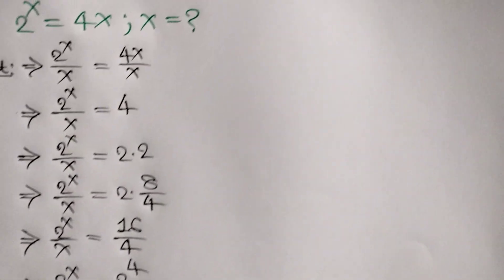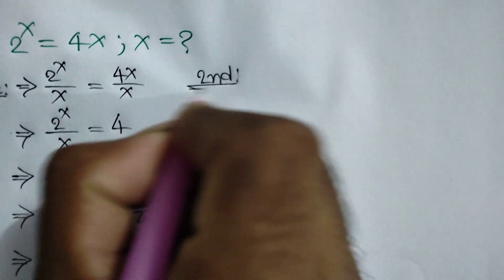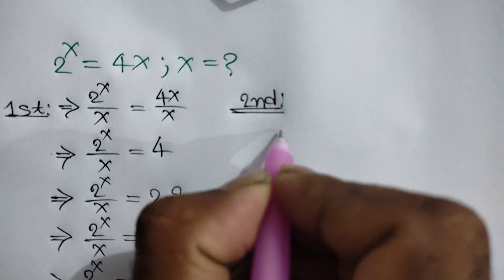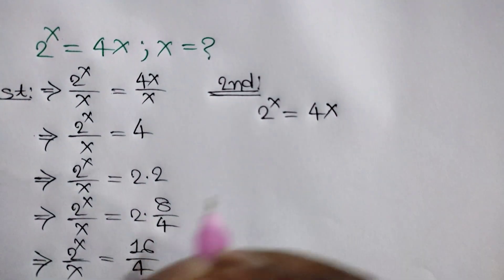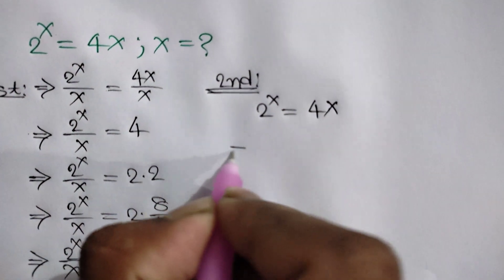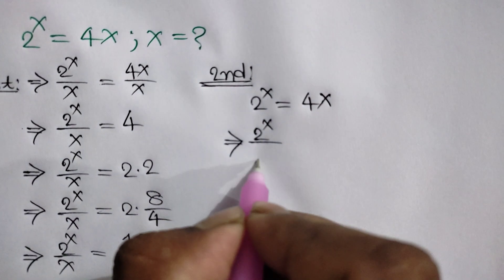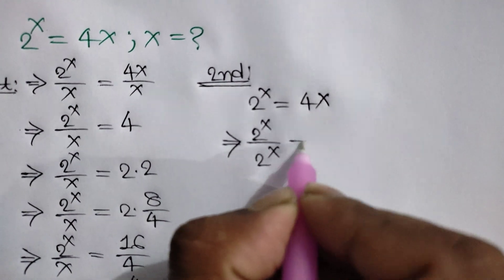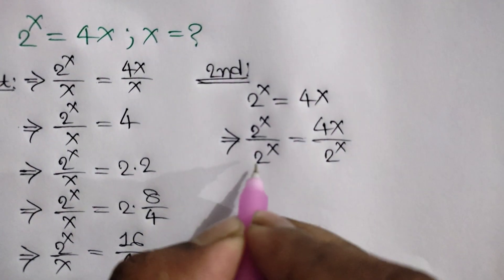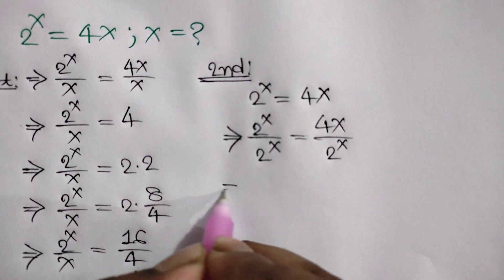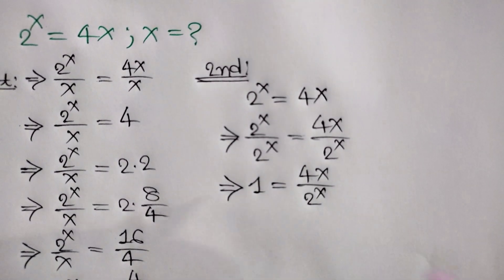Second method. The question has given 2 to the power x is equal to 4x. Dividing both sides by 2 to the power x, we can write 2 to the power x over 2 to the power x is equal to 4x over 2 to the power x. The left side cancels out, so we get 1 is equal to 4x over 2 to the power x.